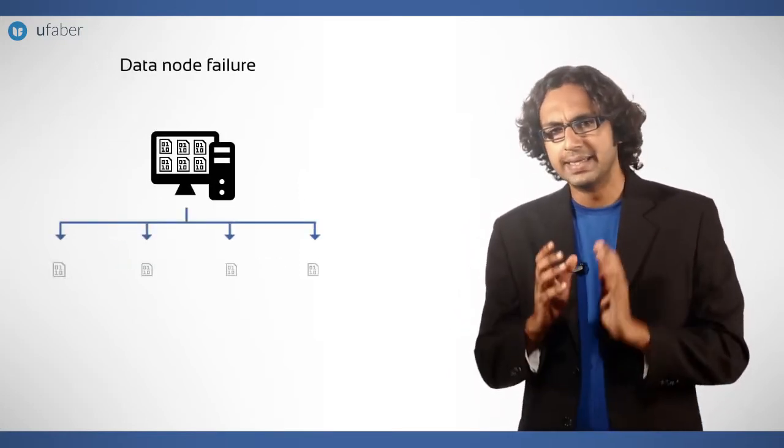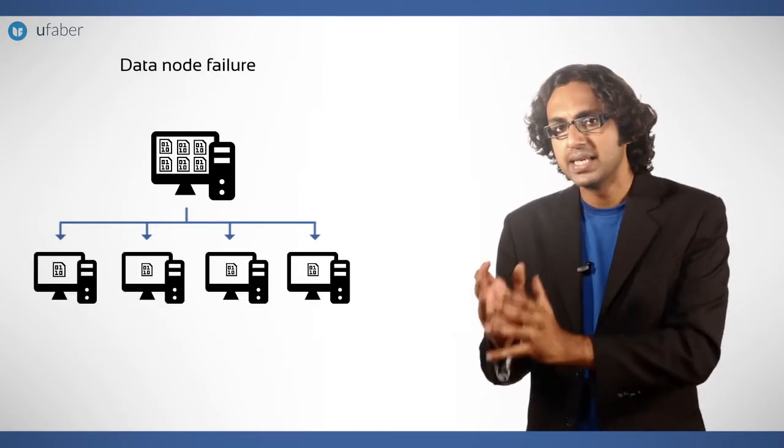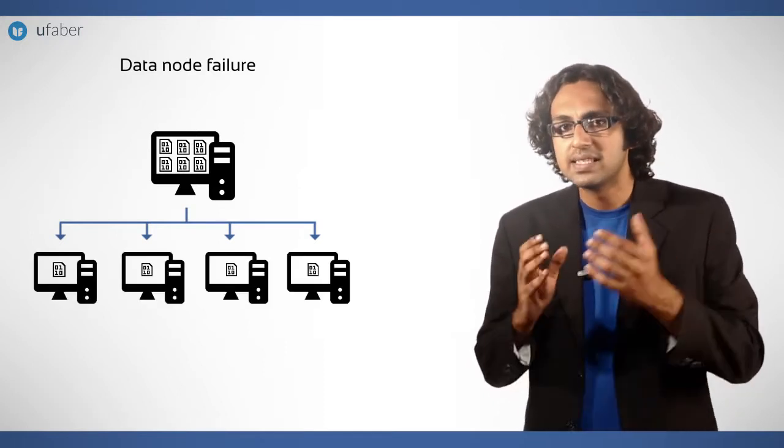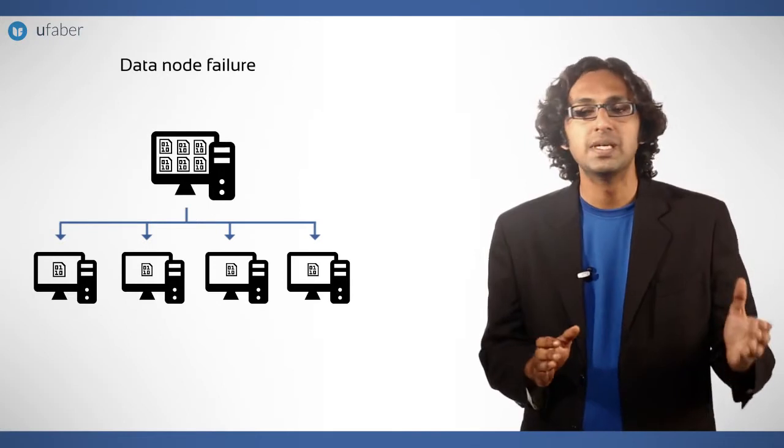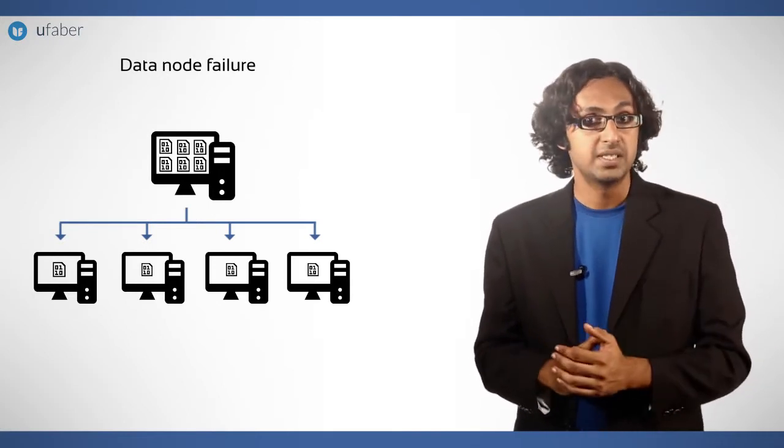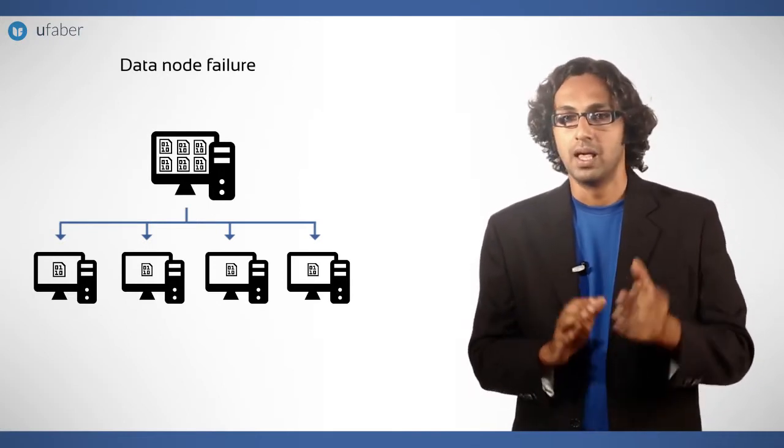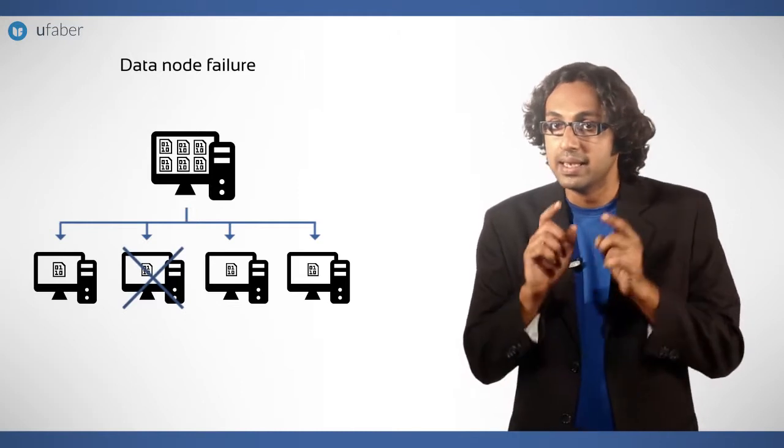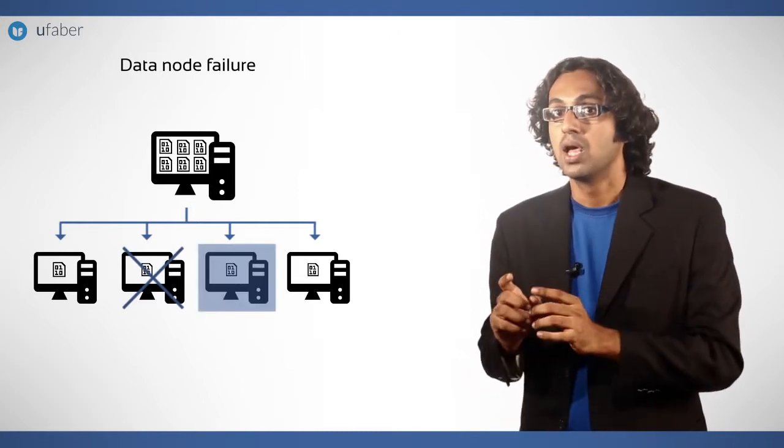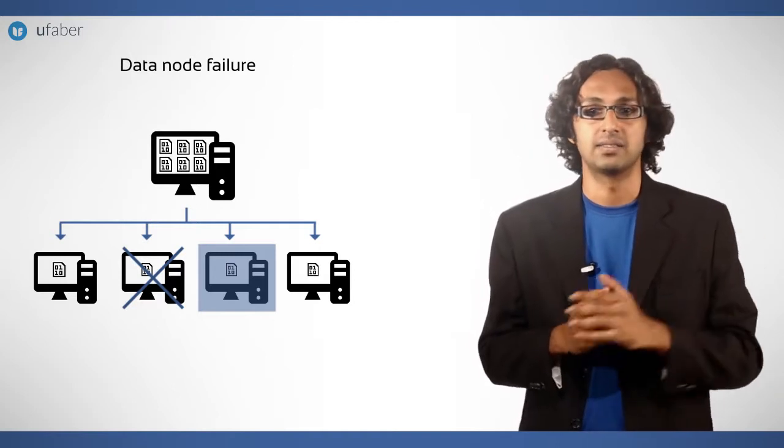Data node failure: Data is distributed among data nodes in such a way that same data is assigned to multiple data nodes. These copies are called replicas. If a data node fails, name node finds another data node with a replica to process the assigned task.